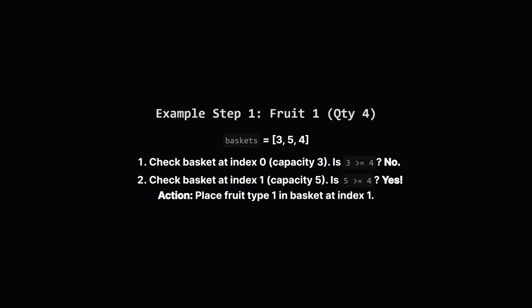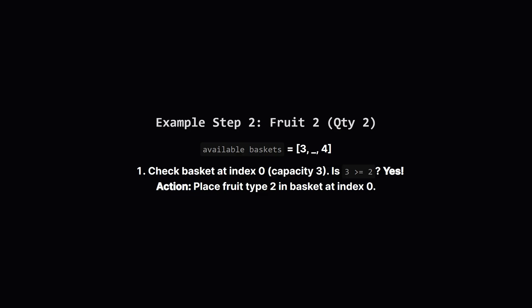First up, the fruit with quantity 4. We scan the baskets from the left. The first basket has a capacity of 3 — not big enough. We move to the second basket, which has a capacity of 5. Is 5 greater than or equal to 4? Yes, so we place this fruit type into that second basket. On to the next fruit, which has a quantity of 2. We again start our search from the very left. The first basket is still available and has a capacity of 3, which is big enough for a quantity of 2. So we place this fruit type in the first basket.